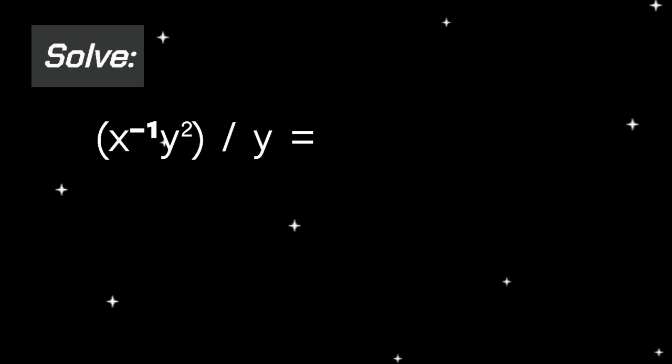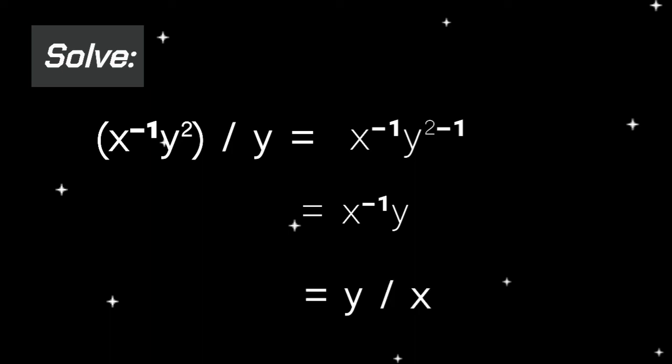Next question: the quantity of x raised to the power of negative 1 times y squared, over y. Using the quotient power rule, we subtract the exponents of the variables with the same base. That gives x raised to the power of negative 1 times y raised to the power of 2 minus 1, equaling x raised to the power of negative 1 times y. Applying the negative power rule, the final answer is y over x.